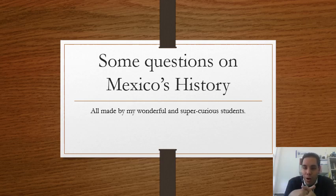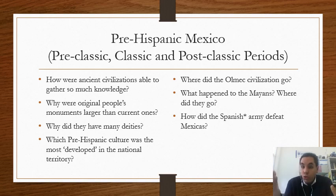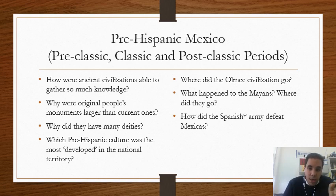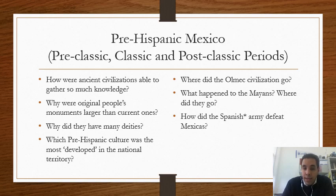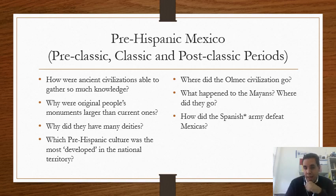So here are some questions in Mexican history, whose authors are my wonderful and curious students. First, pre-Hispanic Mexico — you would divide questions according to the period. Some questions are very general: how were ancient civilizations able to gather so much knowledge? Why were original peoples' monuments larger than current ones? Why did they have many deities? Which pre-Hispanic culture was the most developed in the national territory? Any team covering the pre-classic, classic, or post-classic may answer these.